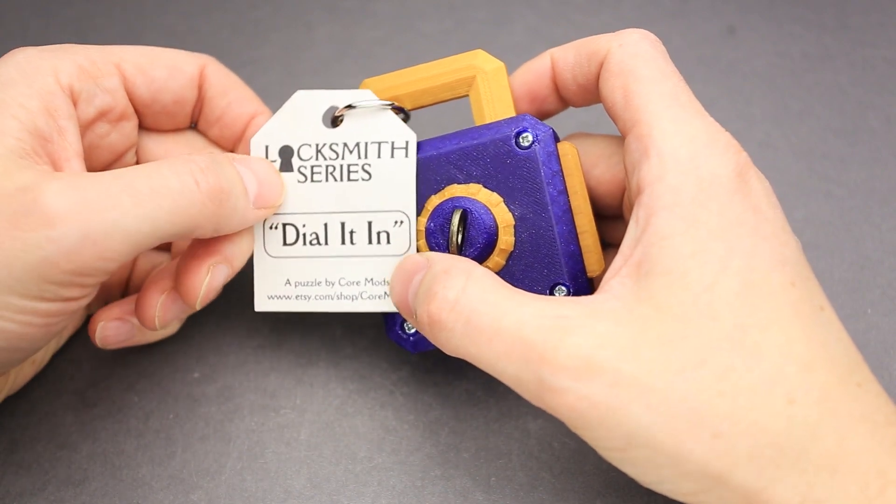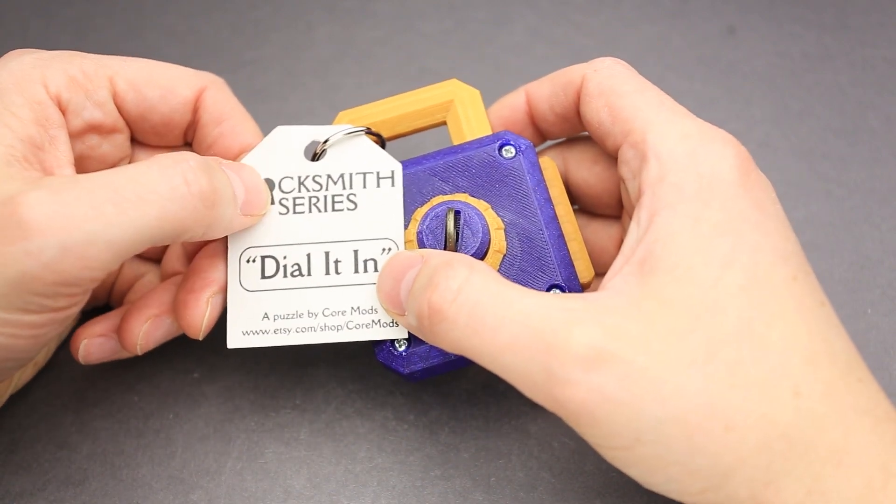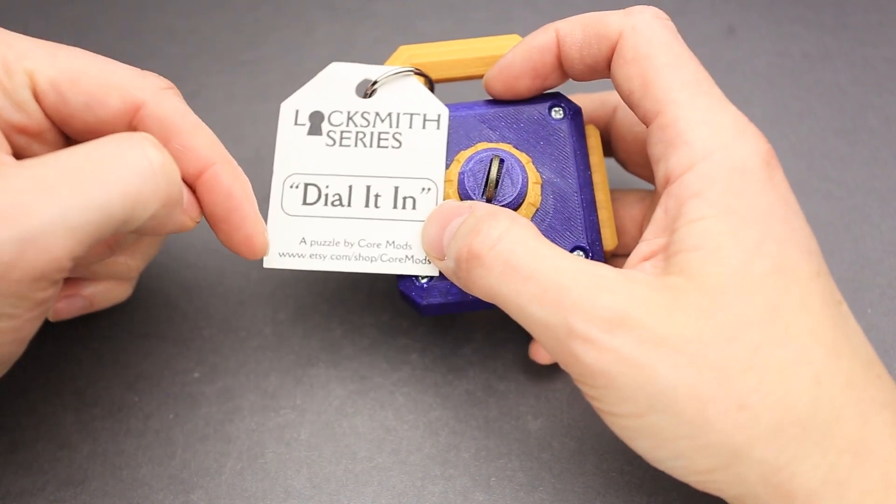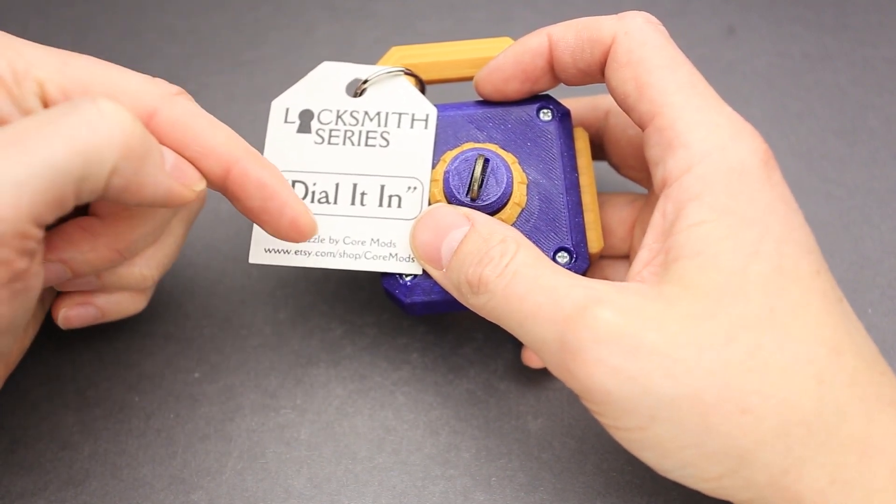The name of it is Dial It In. It is a part of Locksmith series and it was made by Core Mode. So you can buy the puzzle at Etsy.com Shop Core Modes.